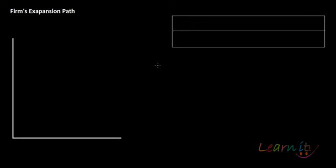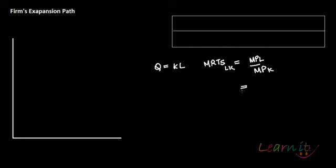Let's look at the firm's expansion path. Suppose you have Q = KL as your production function. What is the MRTS here? It is given by MPL divided by MPK, which is the ratio of marginal product of labor to marginal product of capital. The marginal product of labor is ∂Q/∂L and the marginal product of capital is ∂Q/∂K, giving us K/L.